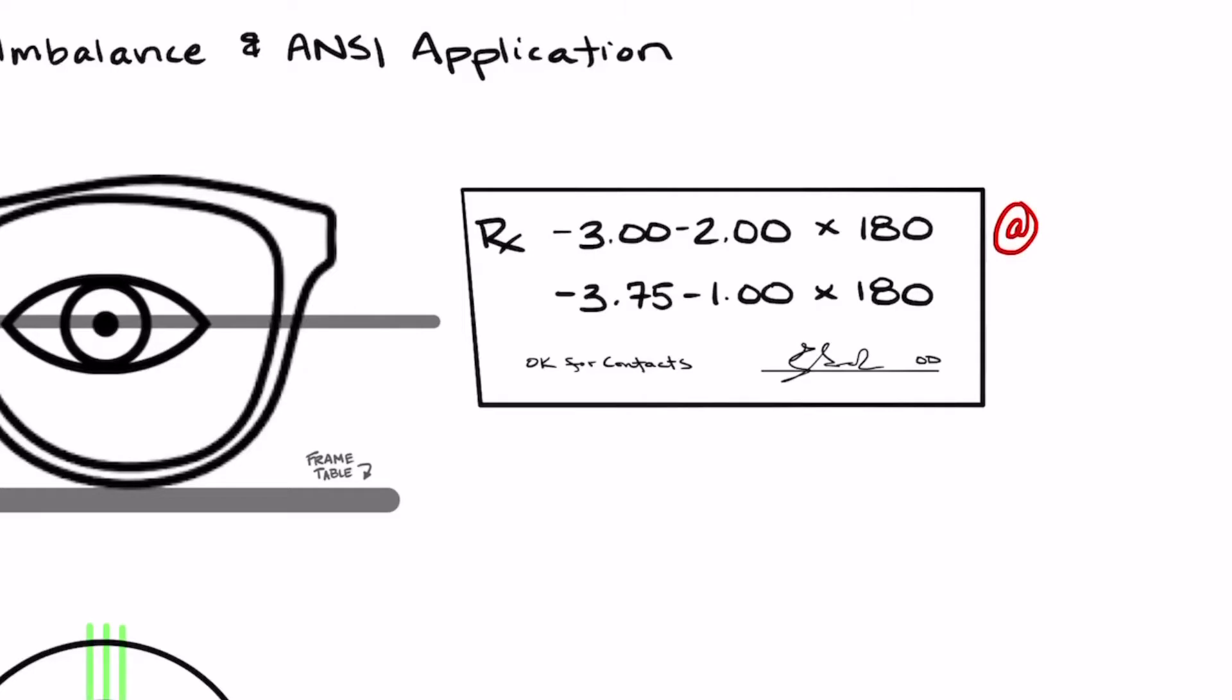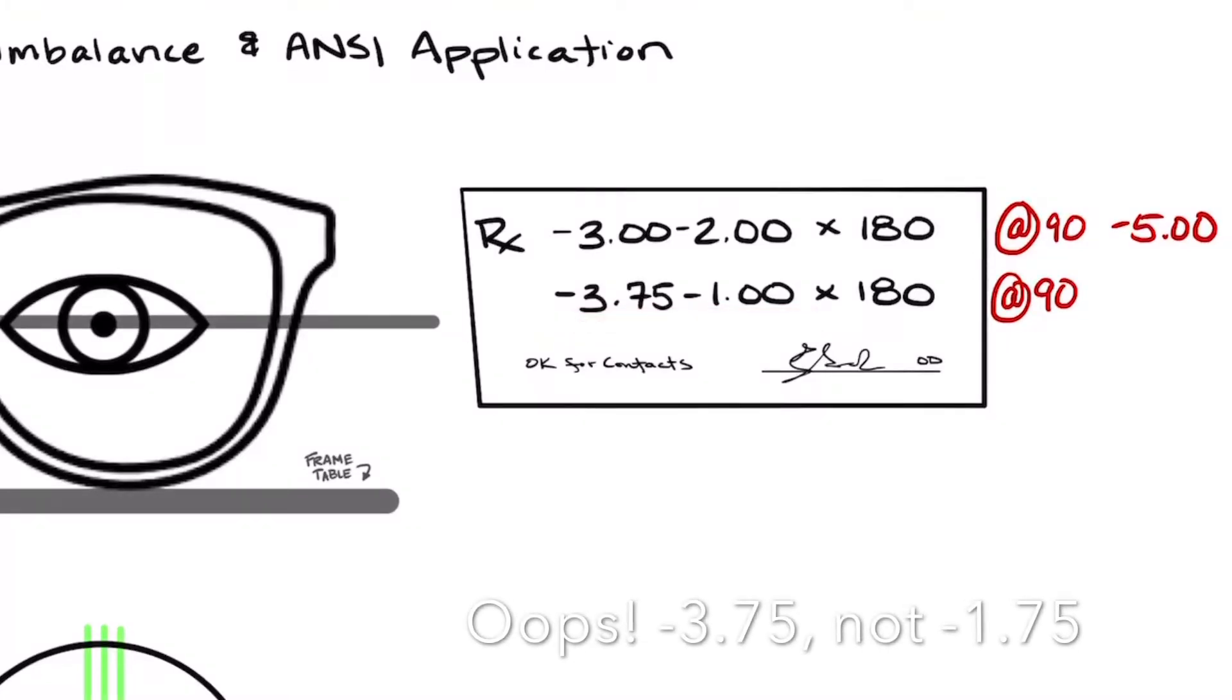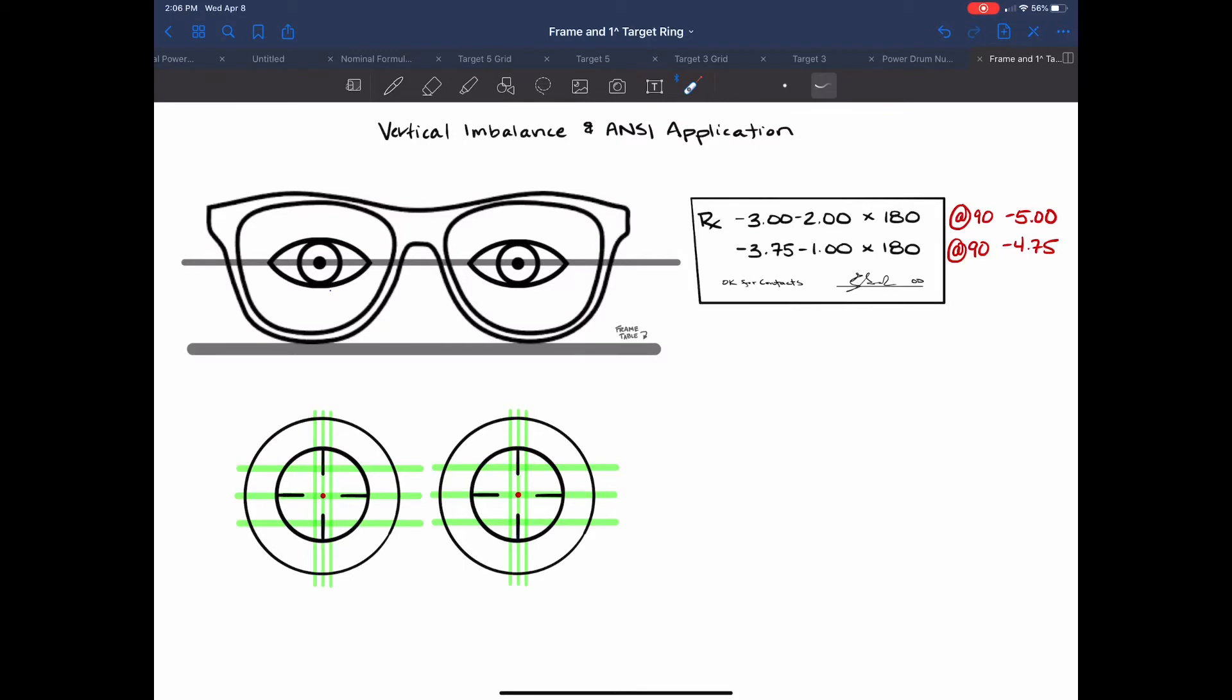So at 90 and for both of these powers we get a minus 5 for the right eye and then for the left eye we're adding both the minus 1.75 minus 1 and that gives us a minus 4.75 for the power. Now when we see we see that the right eye is actually the stronger at minus 5. So we're going to center it first.